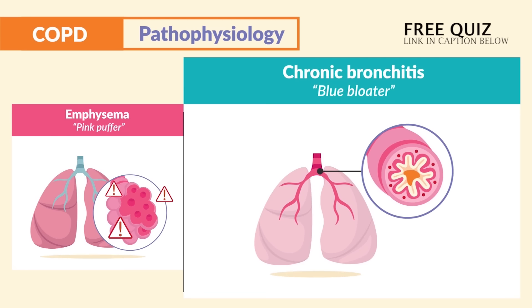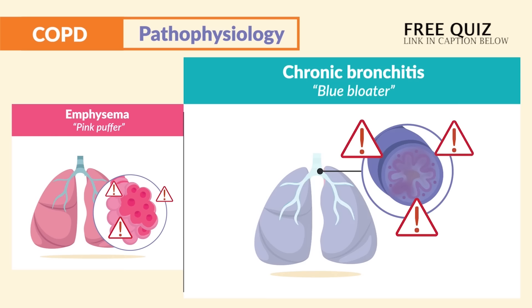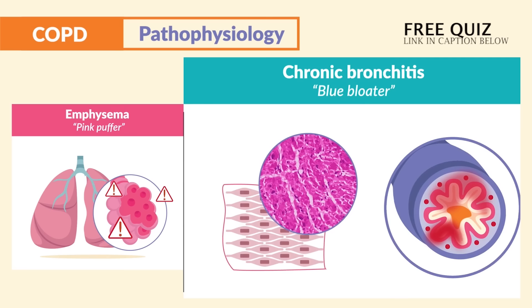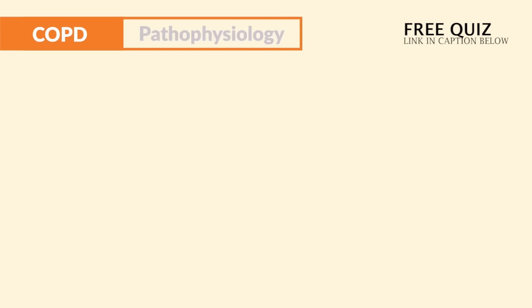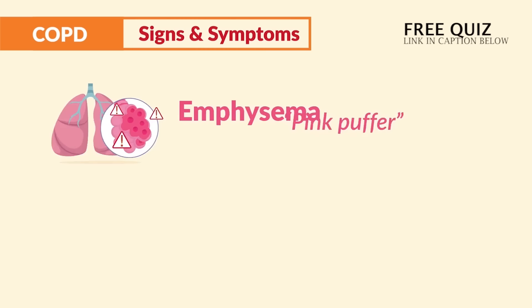For chronic bronchitis, think 'blue bloater' because they are usually cyanotic, which turns them blue. This happens due to inflammation of the bronchi, smooth muscle hypertrophy and contraction within the bronchi, as well as excessive mucus production, resulting in a chronic hacking cough and recurring infections.